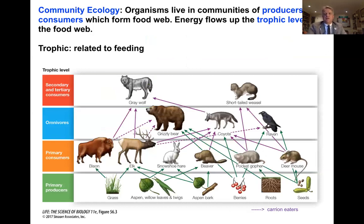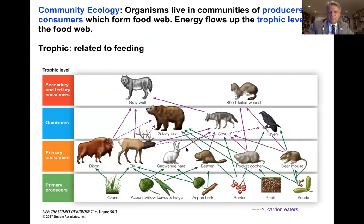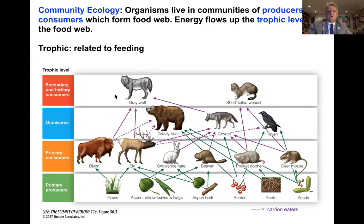We're starting to talk about interactions among multiple organisms — this takes us to community ecology. Organisms live in communities of producers and consumers, which form a food web. Energy flows up trophic levels of the food web. We have plants, which are the primary producers; primary consumers are the organisms eating the plants; then omnivores eating both plants and other animals; then secondary and tertiary consumers — the top predators of these communities. Energy flows from the primary producers all the way to the secondary and tertiary consumers.